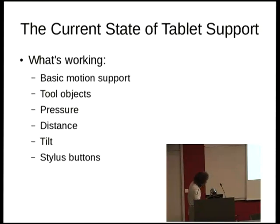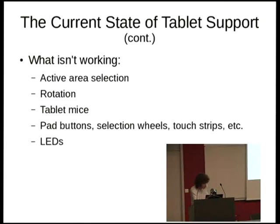The current state of tablet support: we've gotten basic motion support down, tool objects (which I'll explain more in a minute), pressure, distance, tilt, and stylus buttons. Right now we don't have active area selection (which I'll also explain in just a minute) working. We don't have rotation, tablet mice, any of the selection wheels or touch strips that you'll see on some tablets, and no support for LEDs, at least in LibInput and Wayland.